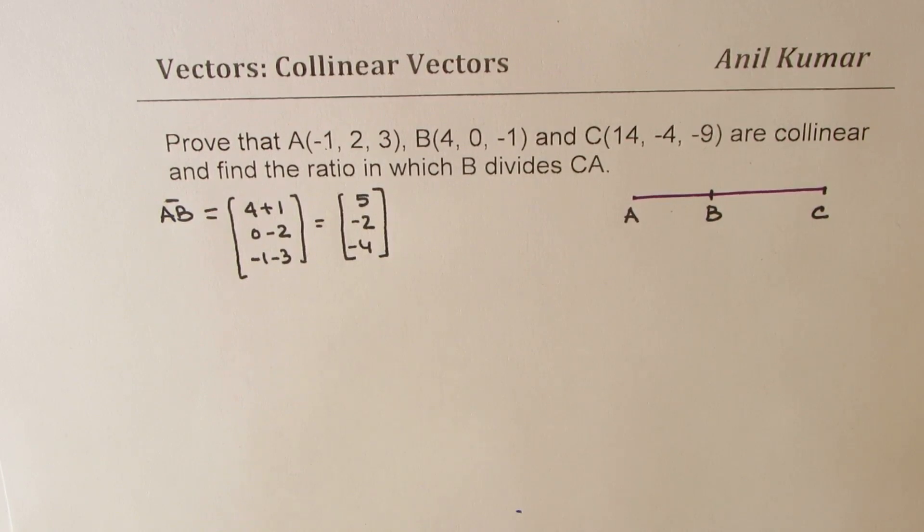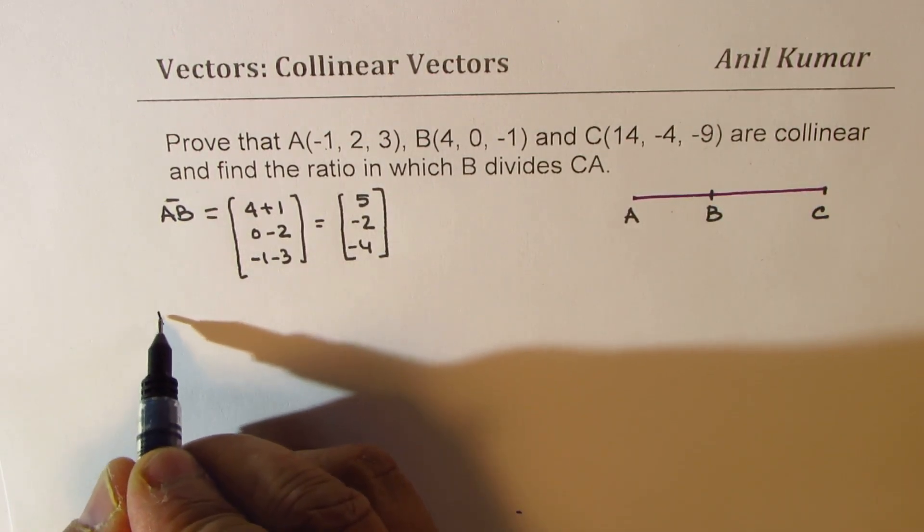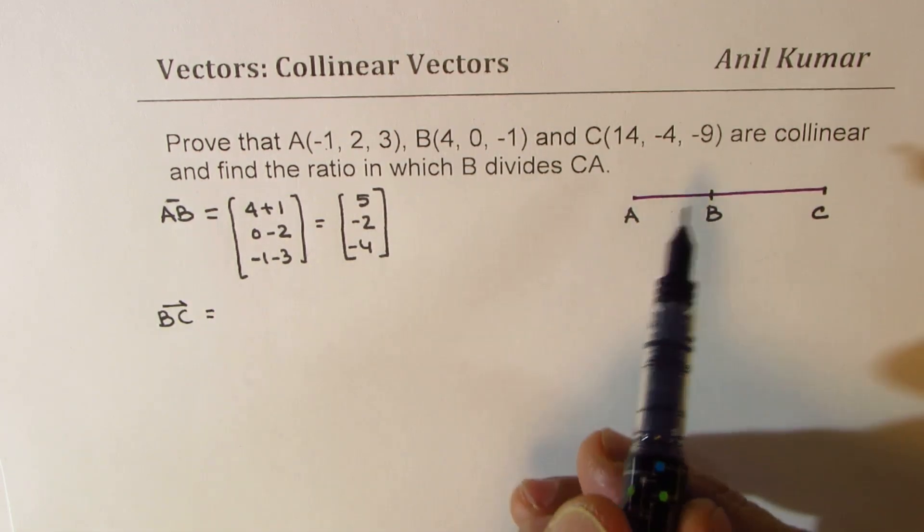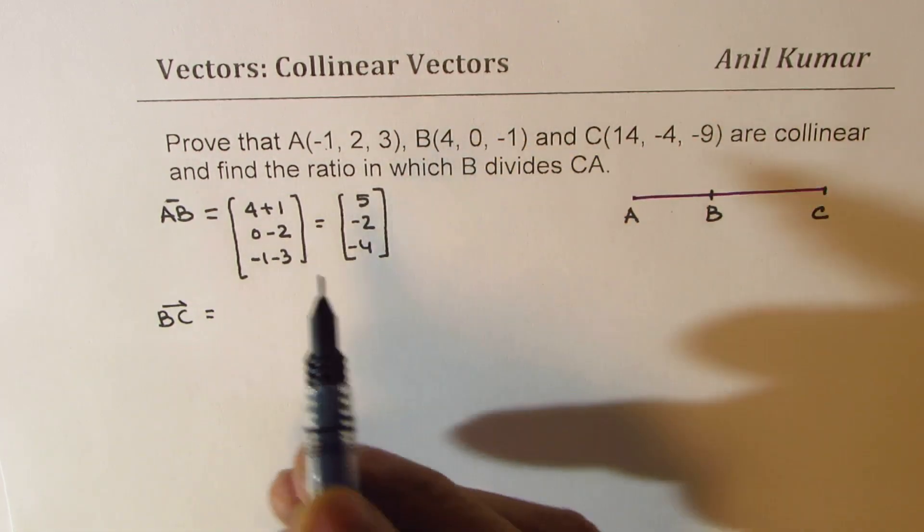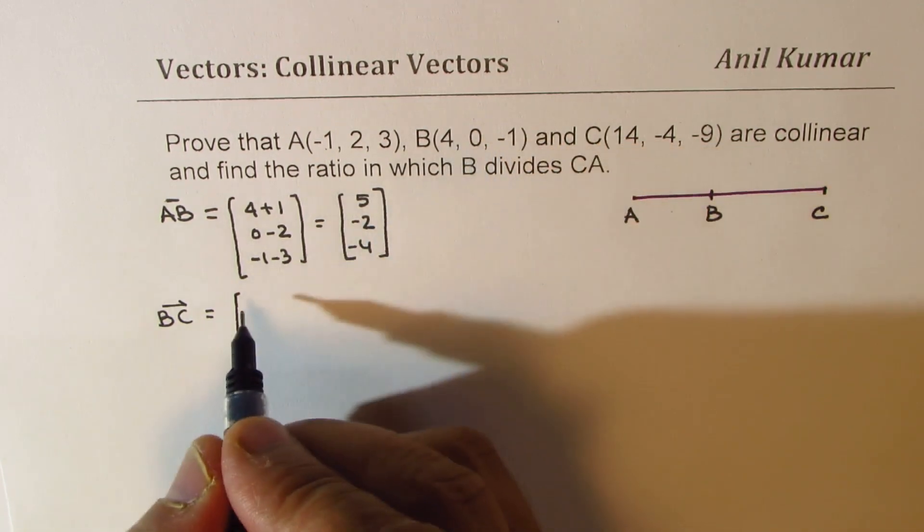Now let us calculate what is BC. So BC will be coordinates of C minus that of B. So we get 14 minus 4,